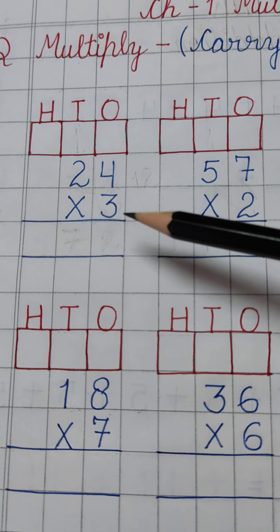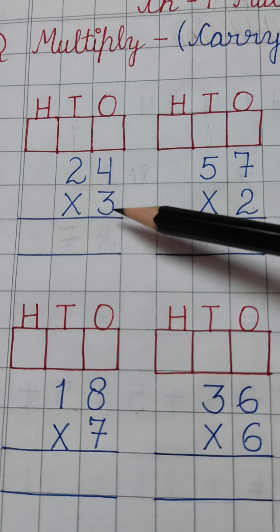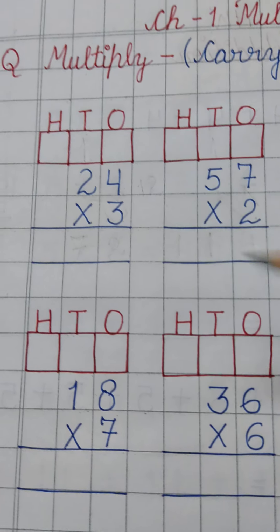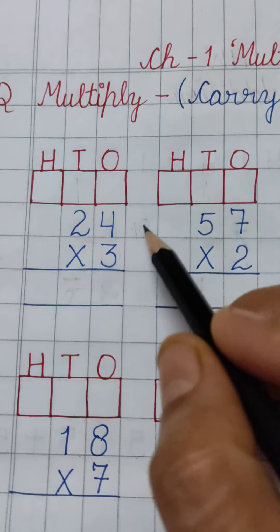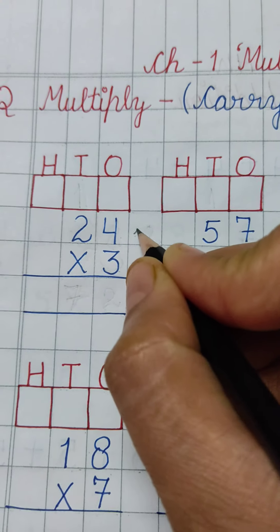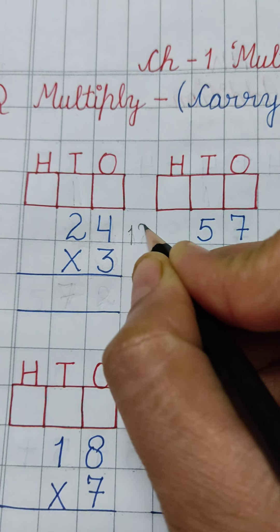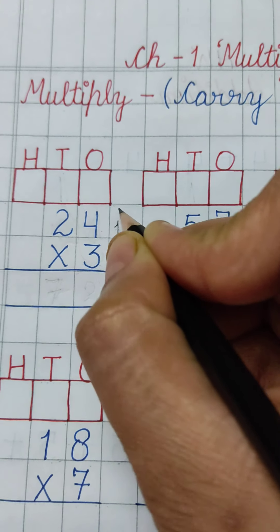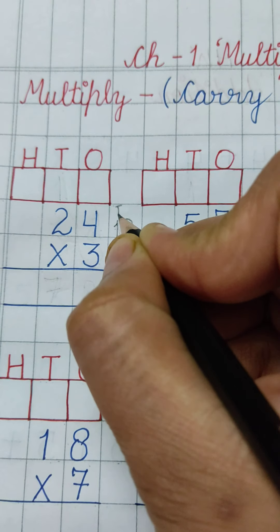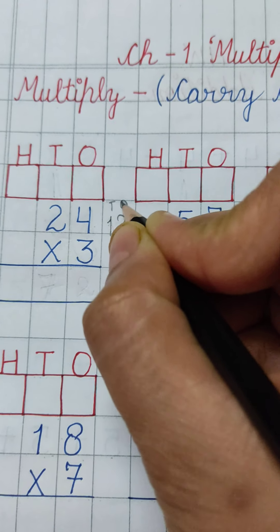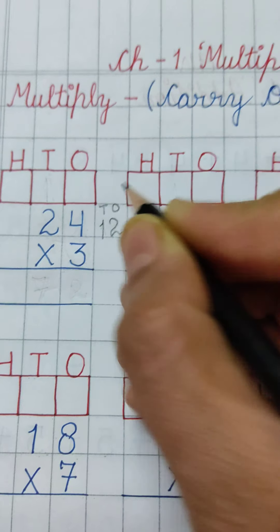First of all we have to multiply 3 4's — 3 4's are 12. This is the 10's and this is the 1's.